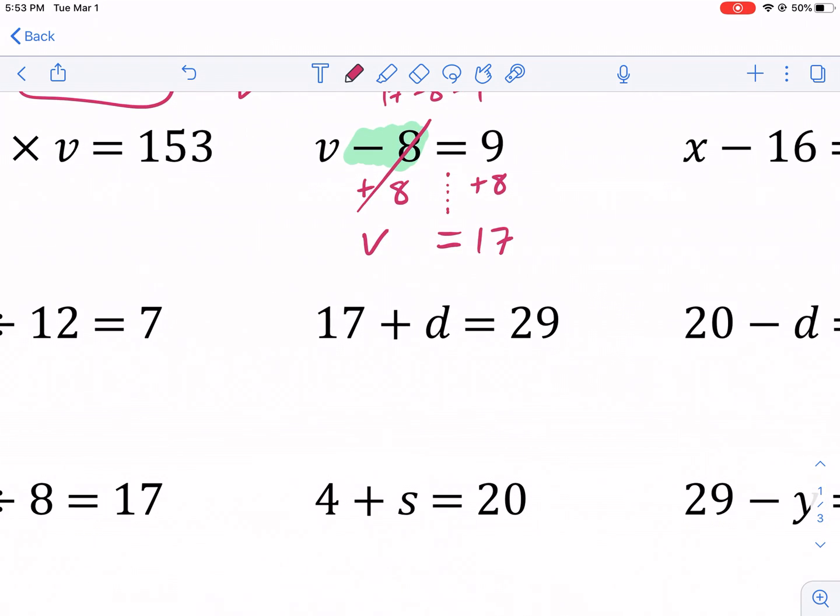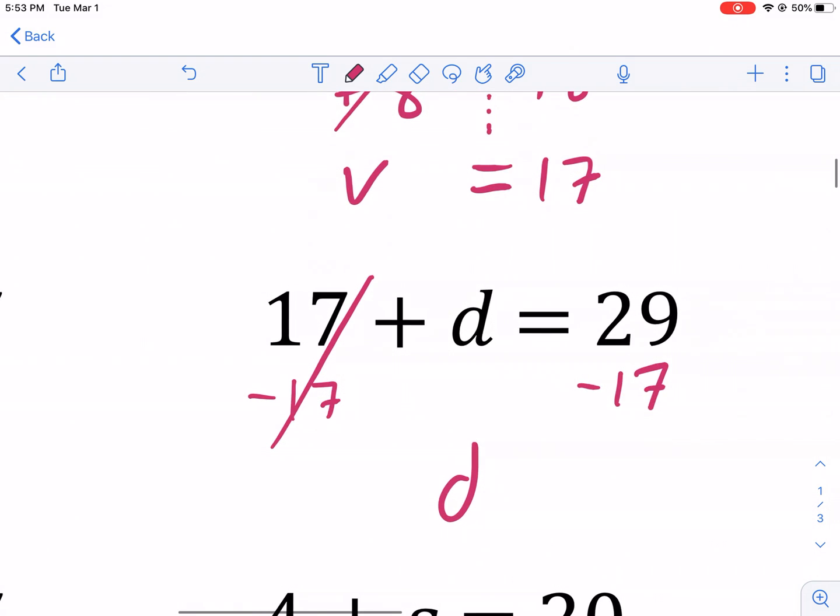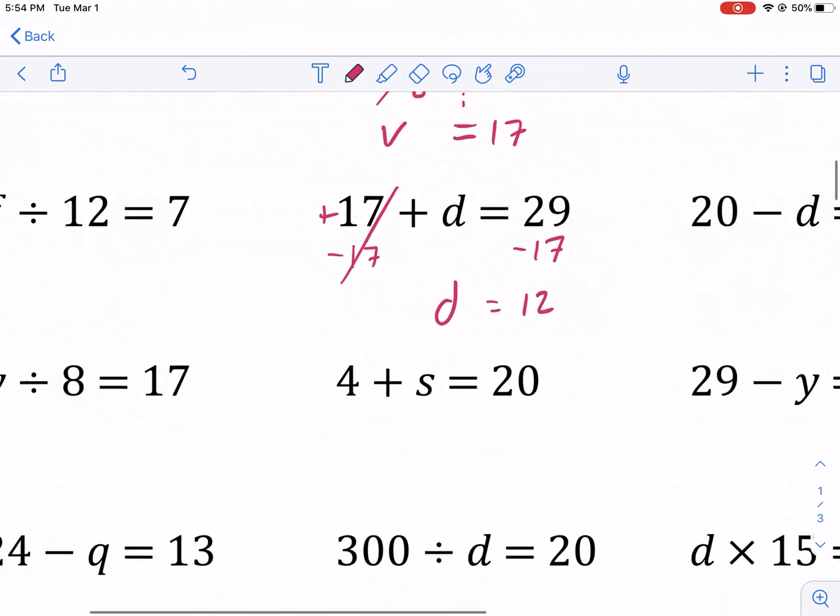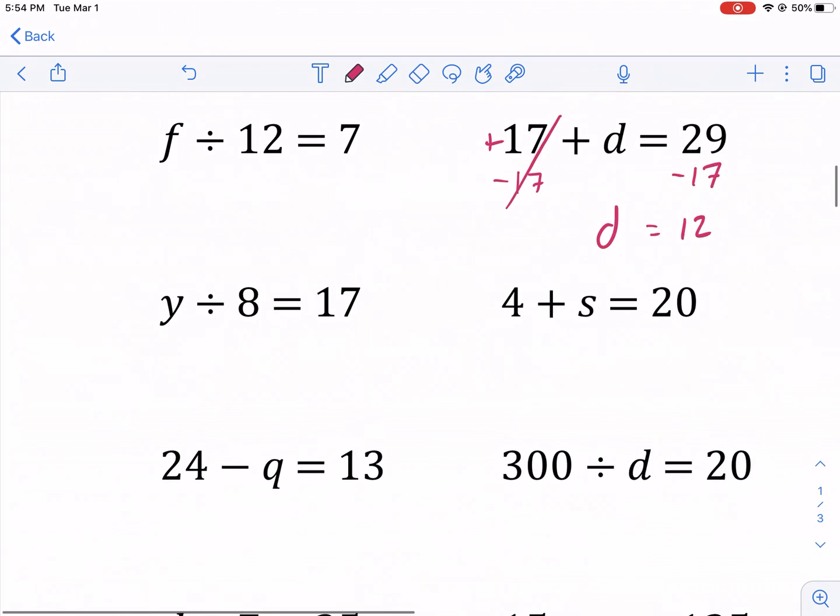Let's do a couple more. So here we have 17 plus D equals 29. We could just go minus 17 from both sides. And we have D by itself because that undoes the 17 there. That's technically an adding 17. And that equals 12. So D equals 12. 12 plus 17 would be equal to 29.